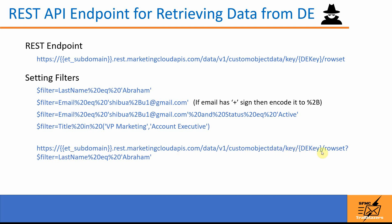The full example URL looks like: your subdomain, data v1 slash customobjectdata slash key slash {DE key} slash rowset, followed by query parameters using the filter. There is a limit of about 2500 records that you can retrieve. I recommend not using this to pull large amounts of data — keep data to a minimum for performance, and I believe that is why the limit exists.